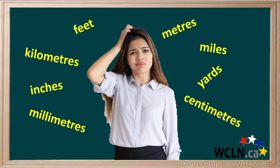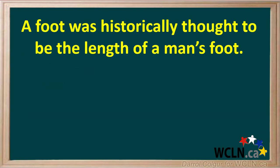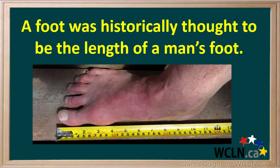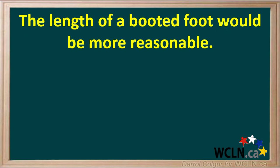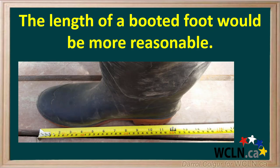But what do all these units mean, and how can we relate these to objects we know? We'll start with a foot. A foot was historically thought to be the length of a man's foot, although we can see the length of an actual foot is a bit less than one foot. It is believed that when the foot originated, most people wore boots. A boot would be longer than a human foot, and we can see the length of this boot is quite close to an actual foot as a measurement.